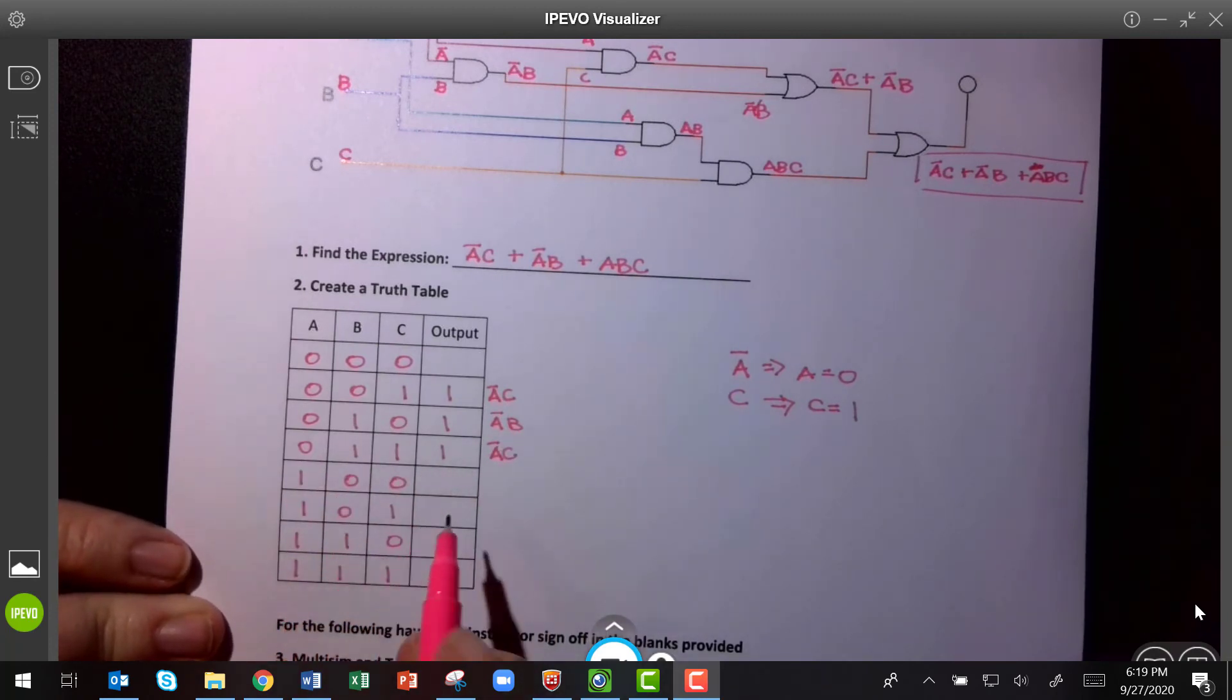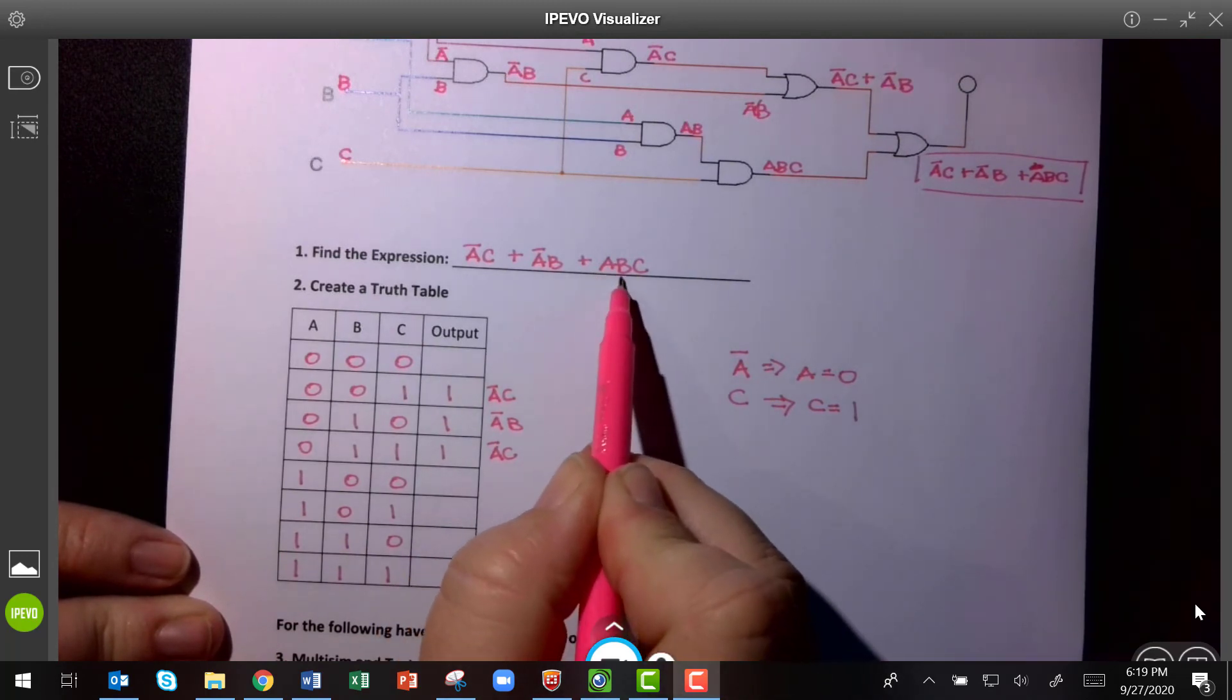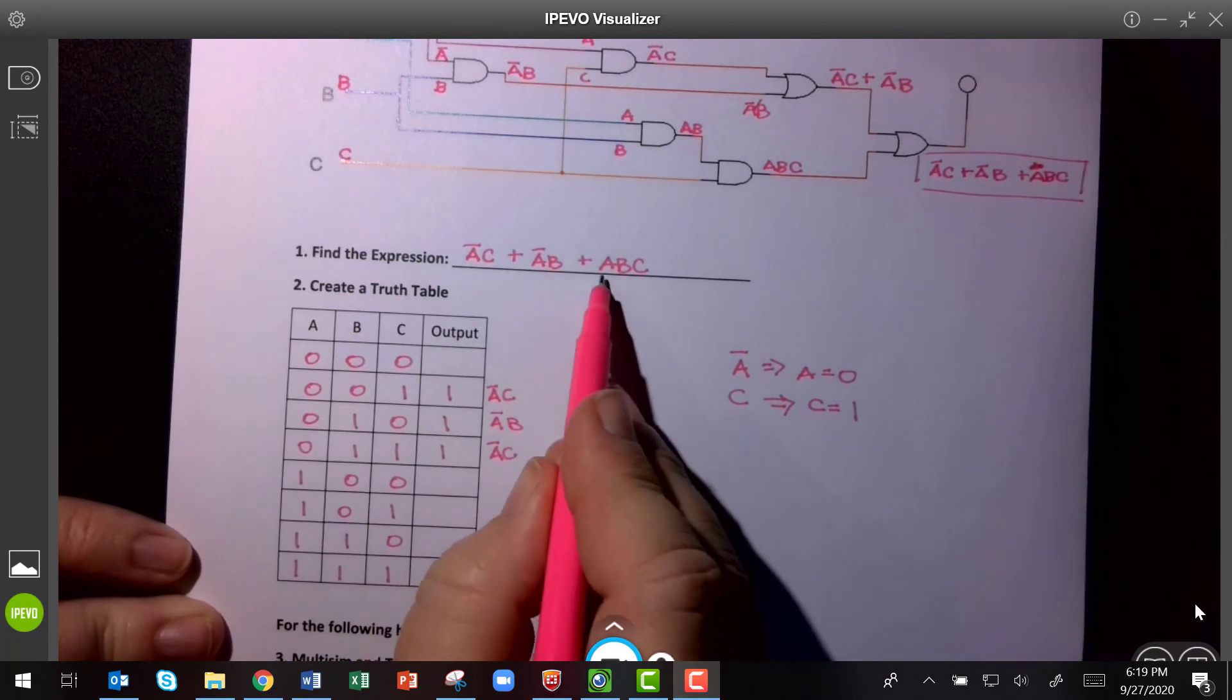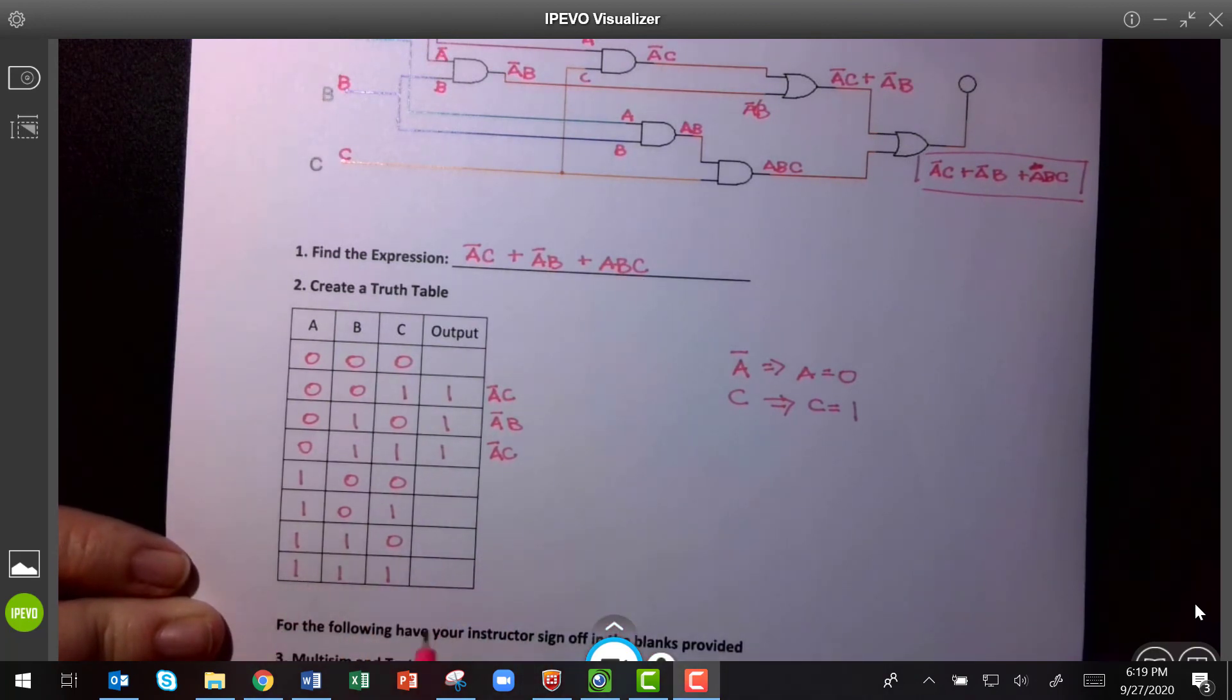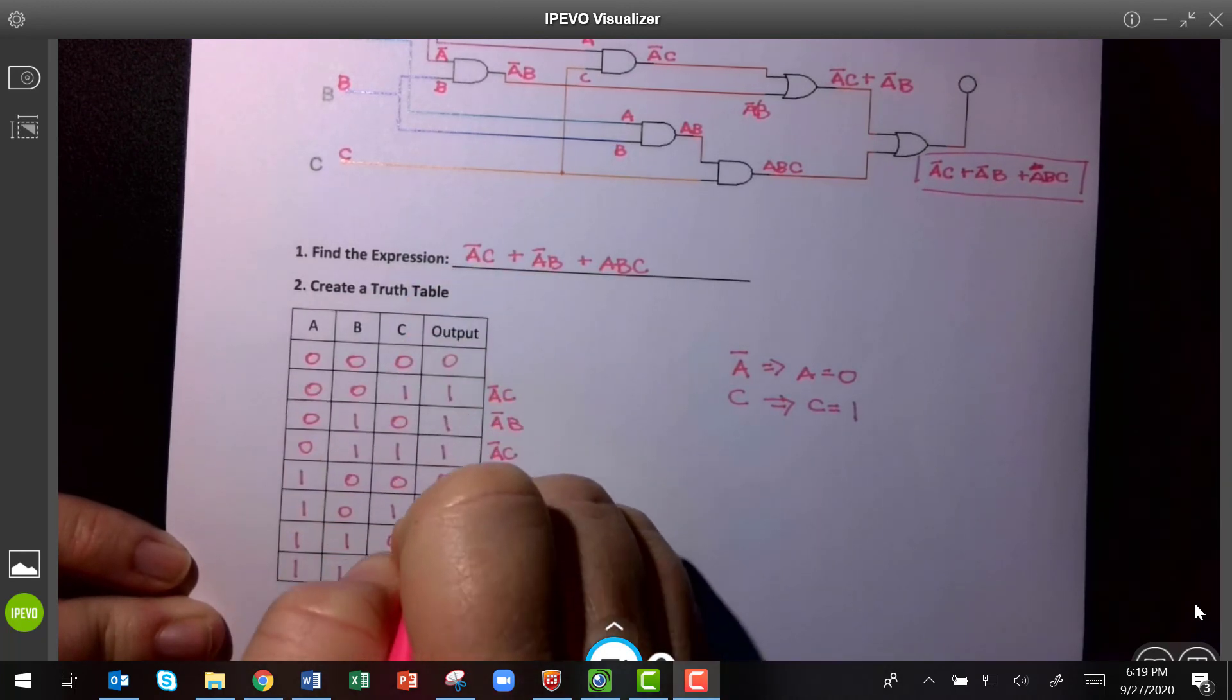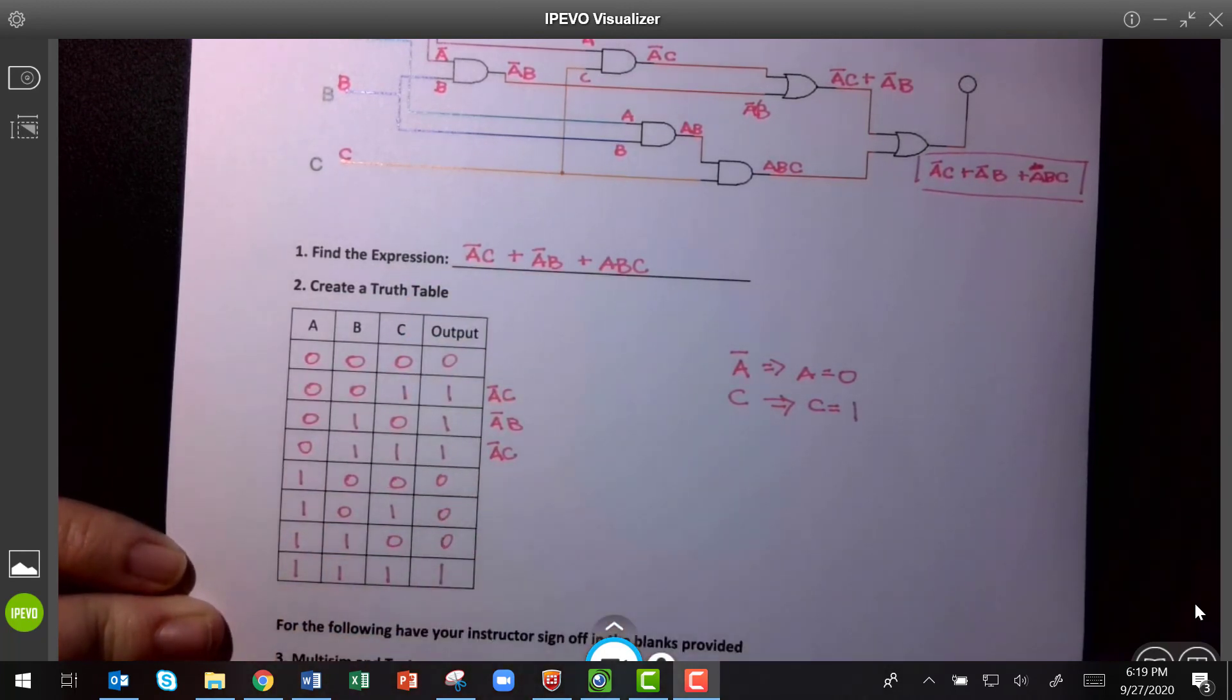So, okay, and now I have my last term, A and B and C. So that means everything's going to be a 1, right? A will be a 1, B will be a 1, C will be a 1. So the only place that's true is here. And I come in and put zeros in the other places.